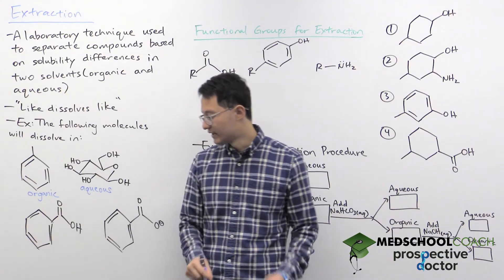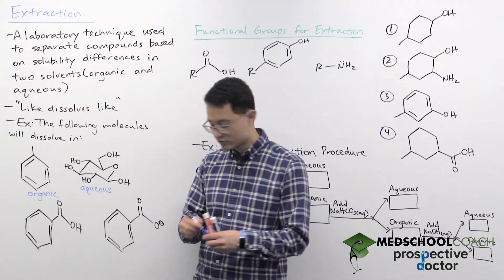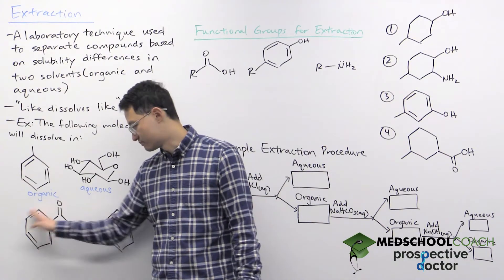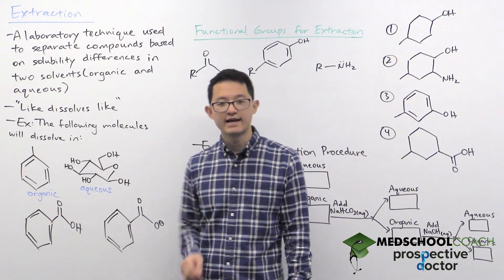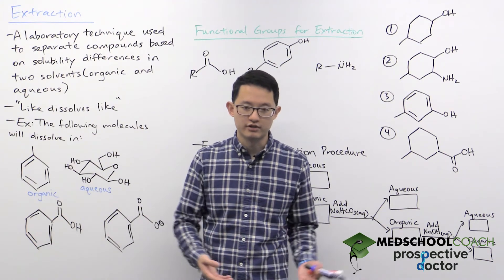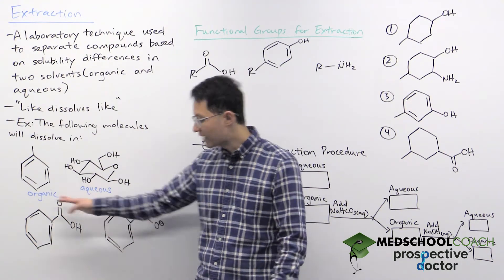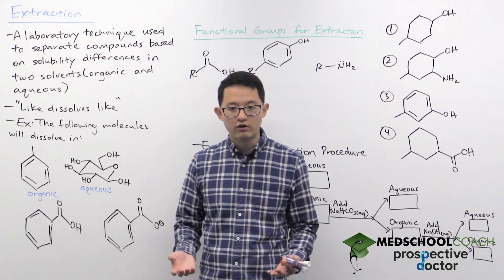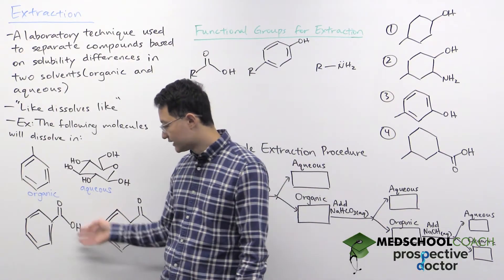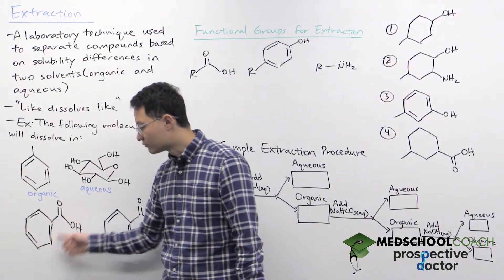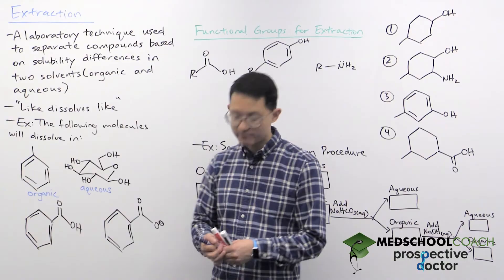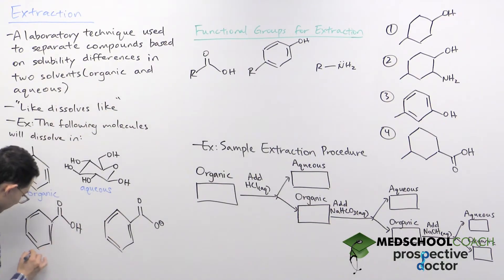On the bottom left we have benzoic acid. This gets more complicated because it has a benzene ring which is mostly nonpolar, and a carboxylic acid that is polar. In these situations you have to look at the molecule as a whole — is it overall polar or nonpolar? In this case the majority of the molecule is nonpolar, so benzoic acid will dissolve in the organic solvent.